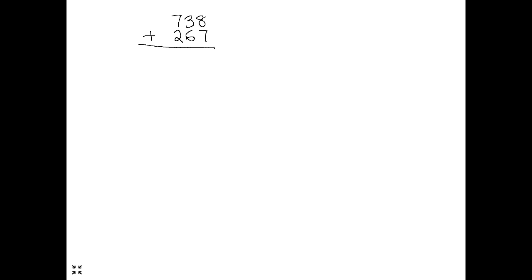We're going to start with an example, but I'm not going to use the conventional way of doing this. I'll name the rows first, because naming is important — it gives me a way to perform abstraction later on. This is row X, row Y, this is Q, this is K, and this is S. X and Y are the names of the two numbers we are adding.